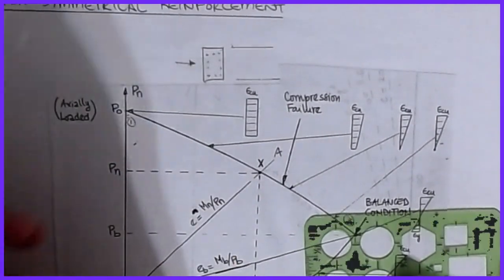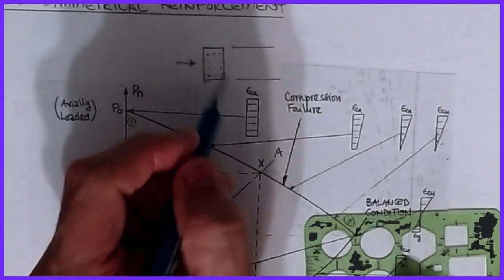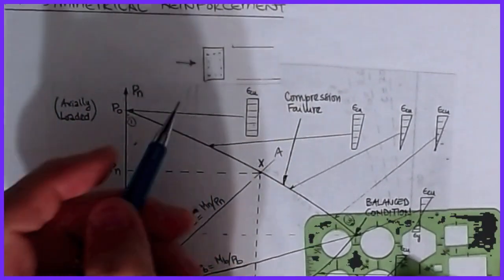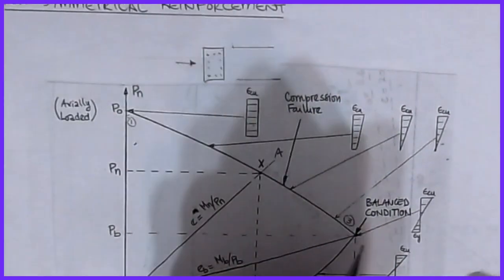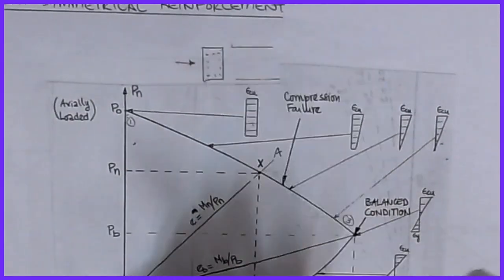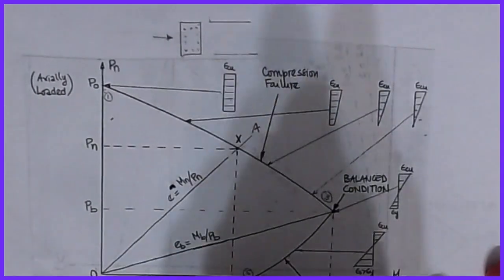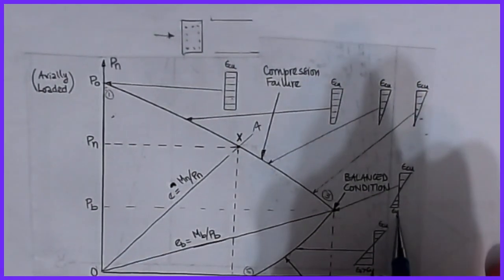I get a uniform strain at all points in the cross section—it's uniform. Then as we get to the scenario where we get to a balance point on here, just like we had with the flexure balance case, we reach εcᵤ at the exact same instance we get to εy here.